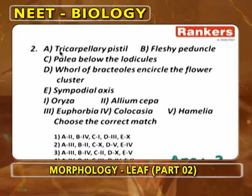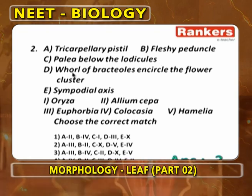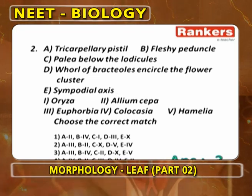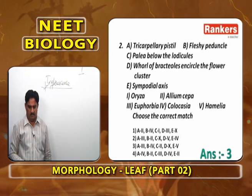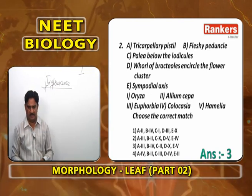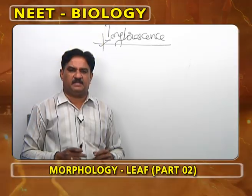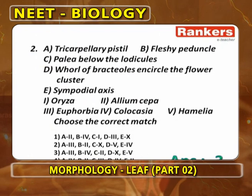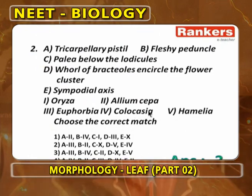Next question: tricarpellary pistil, fleshy peduncle, palea below the lodicules, whorl of brachyoles ringing the flower cluster, sympodial axis — these features correspond to different plants. Tricarpellary pistil is found in Euphorbia (three). In Euphorbia, single female flower has ovary that is tricarpellary syncarpous trilocular. Then B is four — Colocasia. Peduncle is fleshy with upper male flowers, lower female flowers, and central neuter flowers.